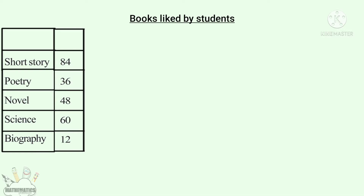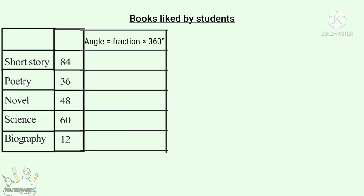We will write the angles as fractions of 360 degrees. For the survey data, the total is 84 plus 36 plus 48 plus 60 plus 12, that is 240. So the total is 240 books.